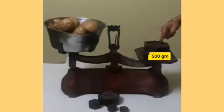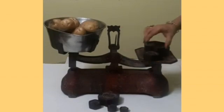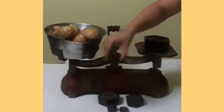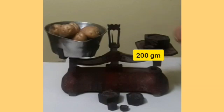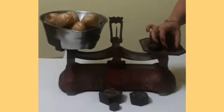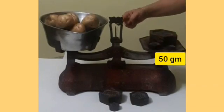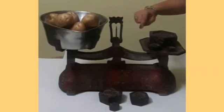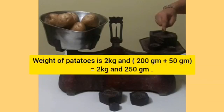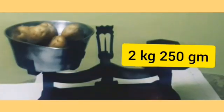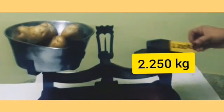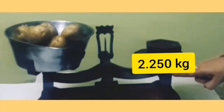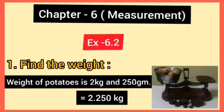Now I will take one 500 gram weight. Notice carefully — the needle is towards the standard weights side. Now I will take 200 gram weight in place of 500 gram weight. Still both sides are not equal. Now I will take 50 gram weight. After taking 50 gram weight, you can see the needle comes to the center position and both sides of the weighing scale are balanced. So the weight of potatoes is 2 kg, 200 gram plus 50 gram — that means 250 grams. We can also write it as 2.250 kilograms.